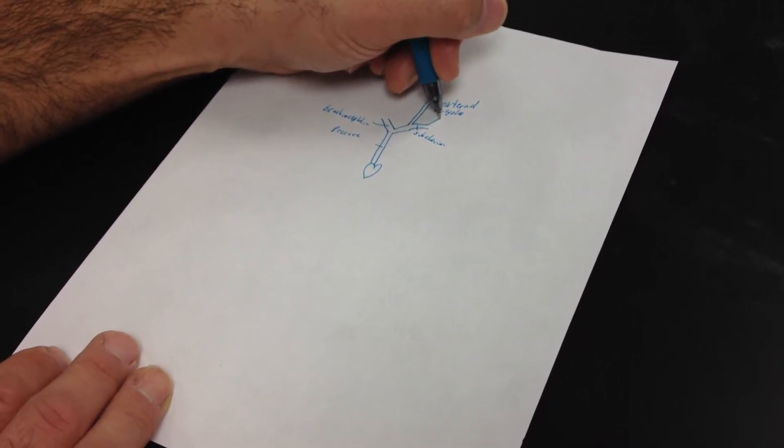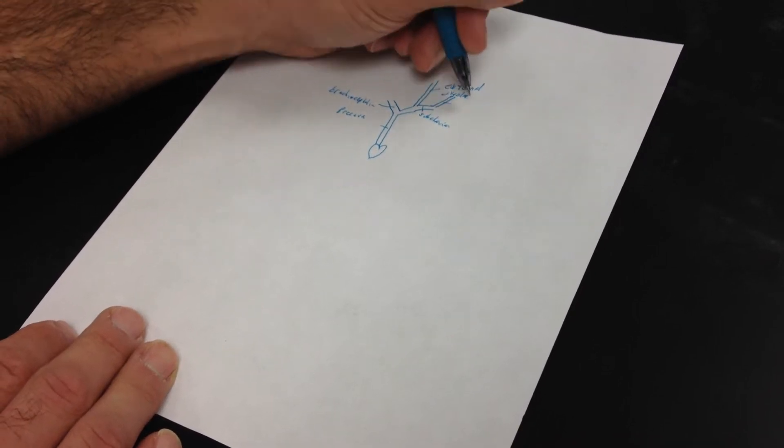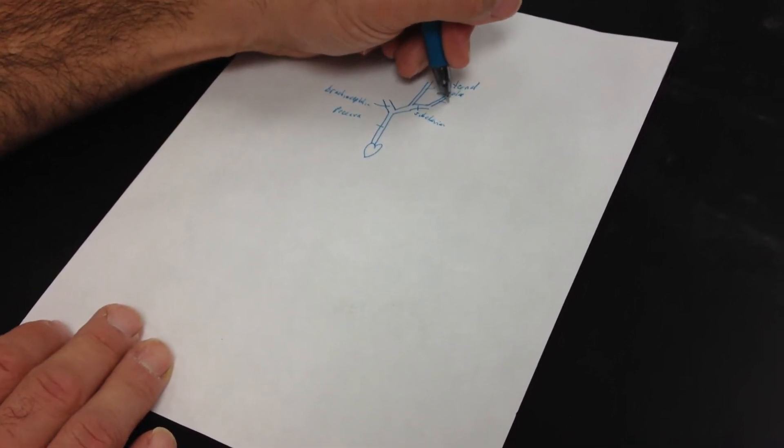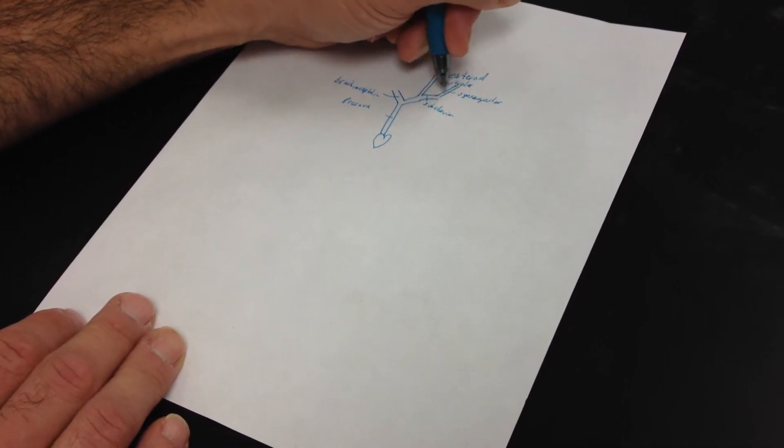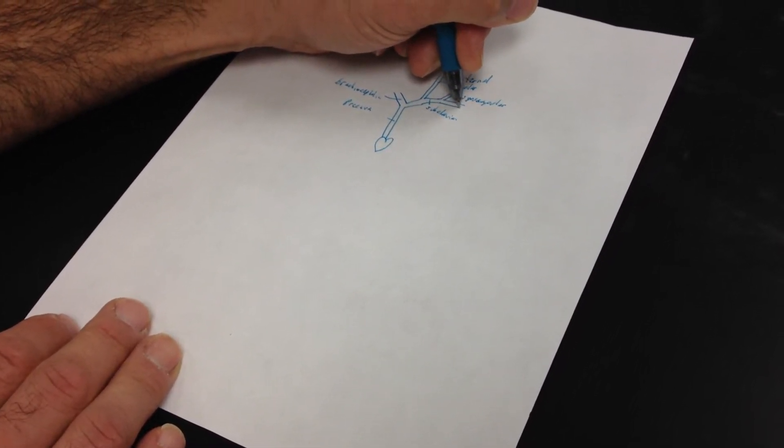Okay, the subclavian are going to quickly branch into the subscapular vein and the axillary vein.